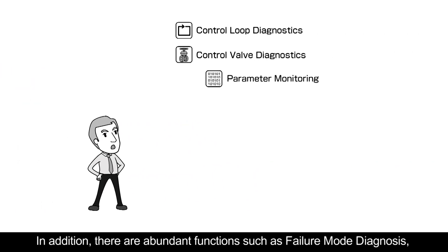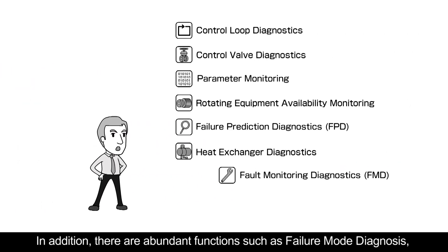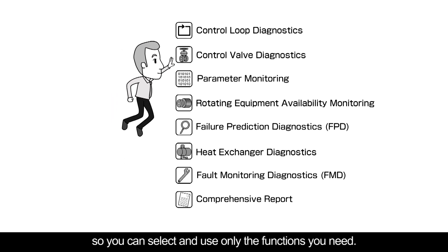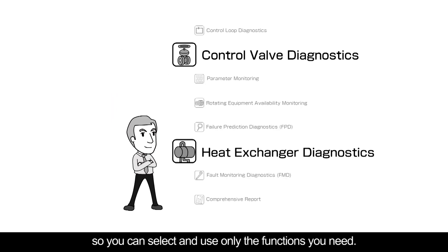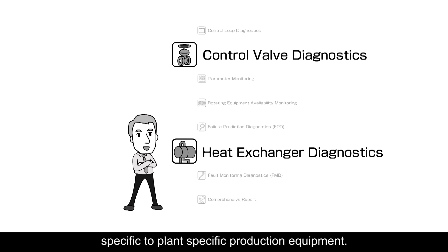In addition, there are abundant functions such as failure mode diagnosis, general purpose predictive diagnosis, and so on. ISAE comes in modules, so you can select and use only the functions you need. Also, it is possible to customize the diagnosis specific to plant-specific production equipment.